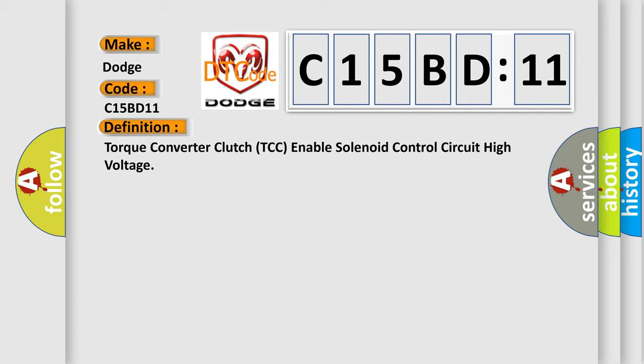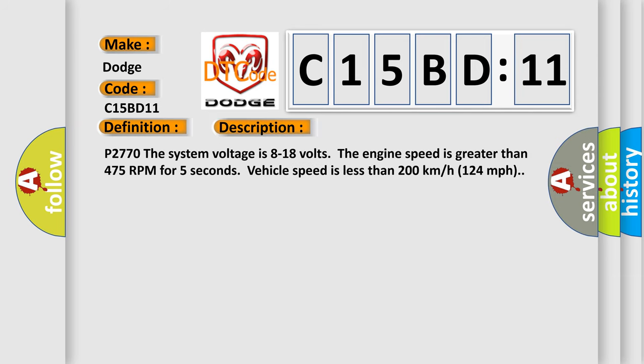And now this is a short description of this DTC code. P2770: the system voltage is 8 to 18 volts, once the engine speed is greater than 475 RPM for 5 seconds. Vehicle speed is less than 200 kilometers per hour (124 miles per hour).